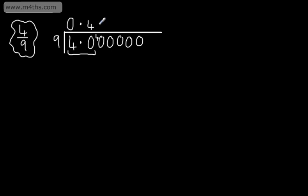I then say, how many 9s go into 40? Well, we know the answer, it's 4, remainder 4. How many 9s go into 40? The answer is 4, remainder 4, and this is just going to keep going.